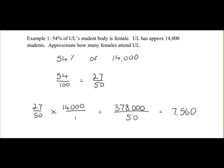Just to recap on that question, we're looking for 54% of 14,000. So we converted the percentage to a fraction, which is 27 over 50. And we multiplied 14,000 by 27 over 50, and that gave us 7,560.